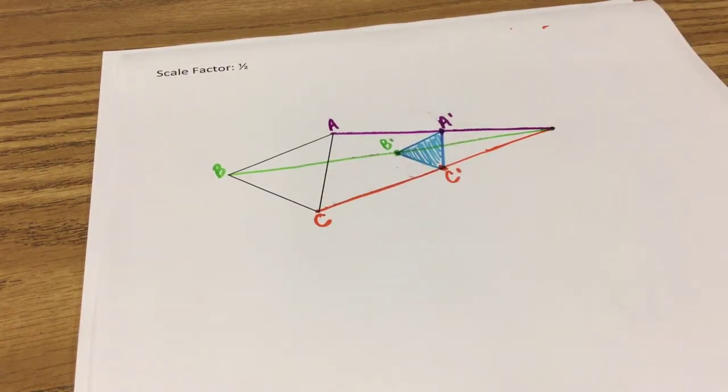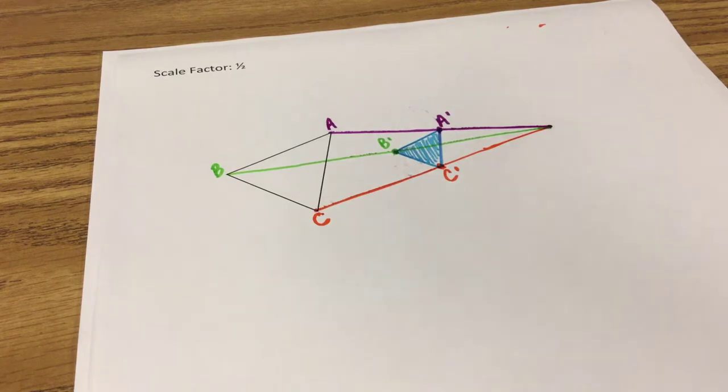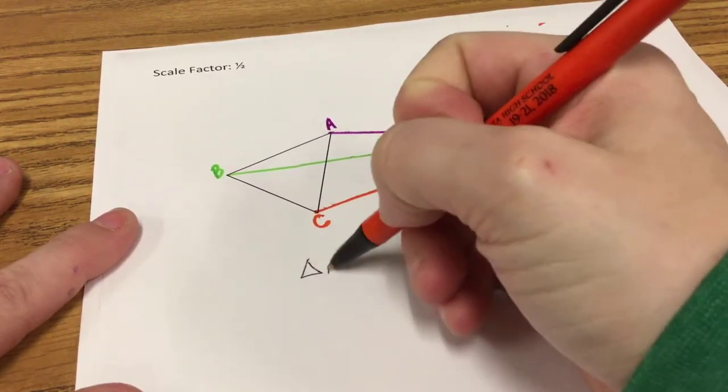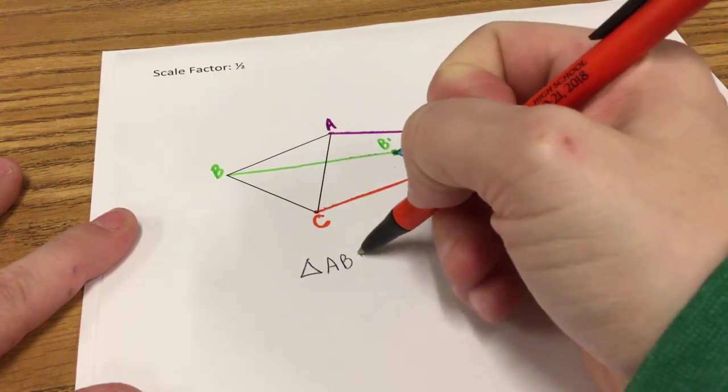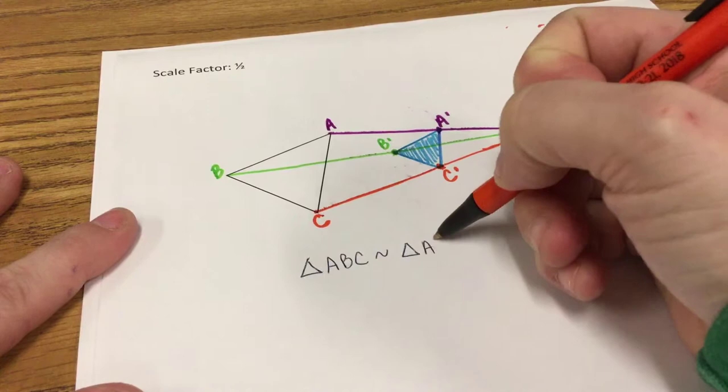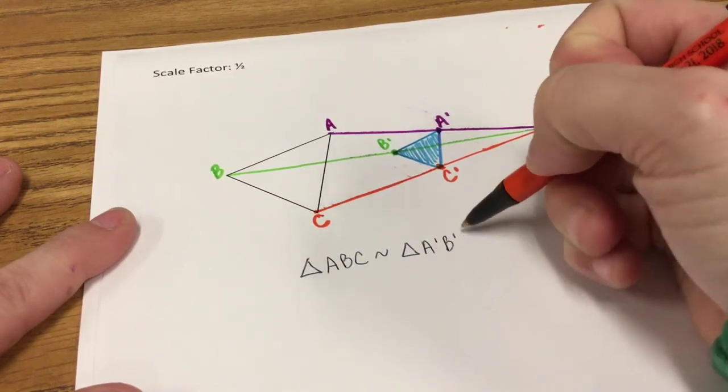So because this is a dilation, we know that the two triangles are similar. So triangle ABC is similar to triangle A prime, B prime, C prime.